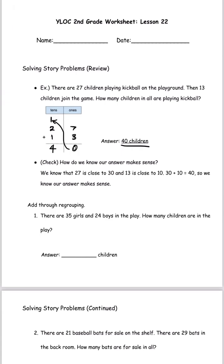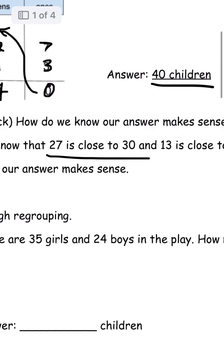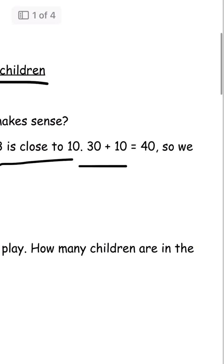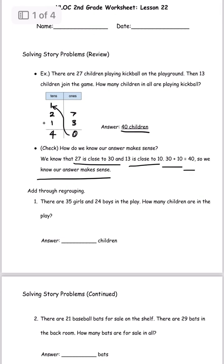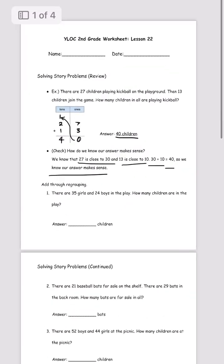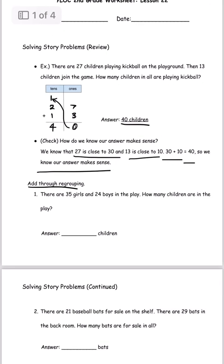How do we check? We know that 27 is close to 30, and 13 is close to 10. So 30 plus 10 is 40, which means our answer makes sense. Because it's either the same or similar when we use this rounding method — if it's similar, then we know our answer makes sense.